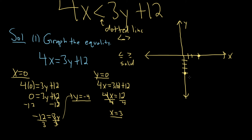So now we draw the dotted line through our two intercept points. The next step is to pick a test point.